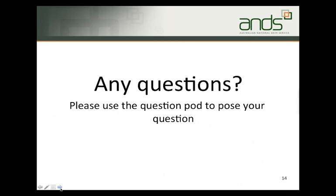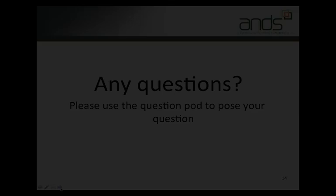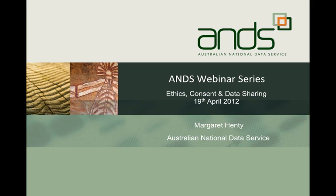I'd like to take the opportunity to acknowledge the contributions of the many people who helped create the ANS guide. Some provided text, some comment, some encouragement. The UK Data Archive gave us permission to use the ethics chapter of their data management guide as the basis for ours, and we've had useful feedback from the staff of Victoria University, ADA, ATCEDA, staff of the NHMRC, staff of the Research Office of the Australian National University, and of course staff of ANS. This is actually a repeat recording of the ANS webinar because we had technical issues with the original recording, but there were questions posed at the end of the presentation and I'd like to go through some of these and the answers which were given.